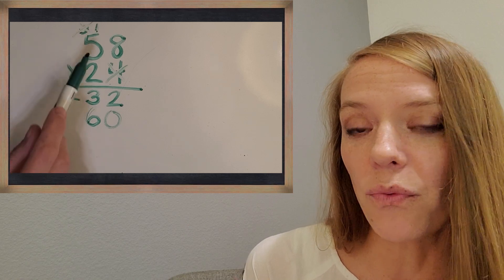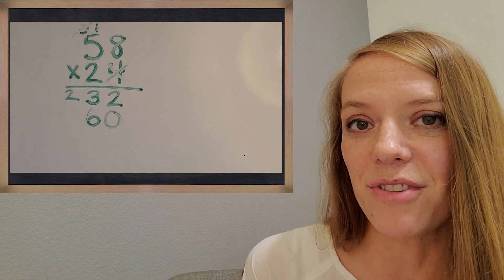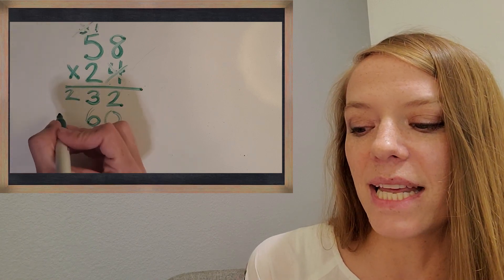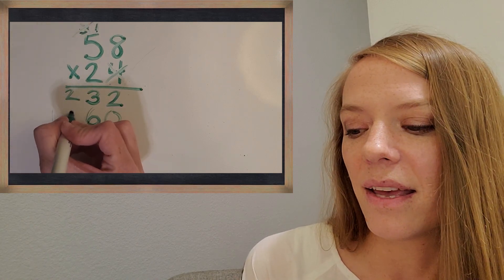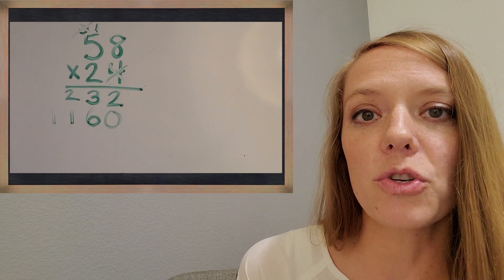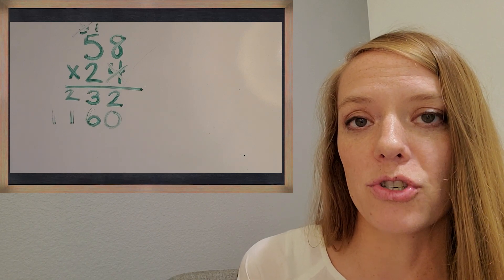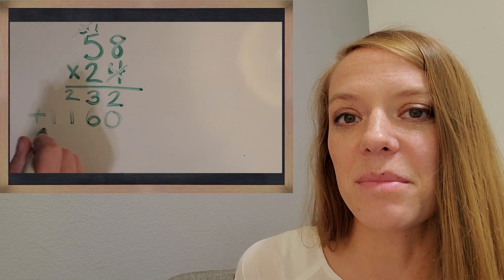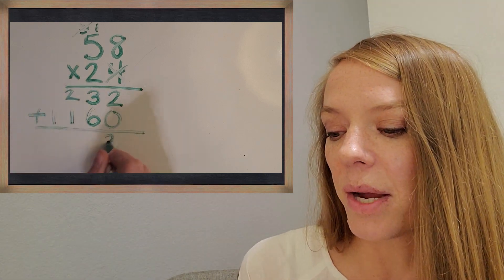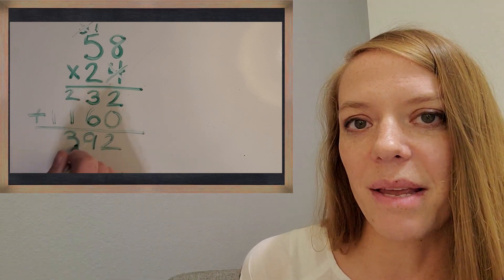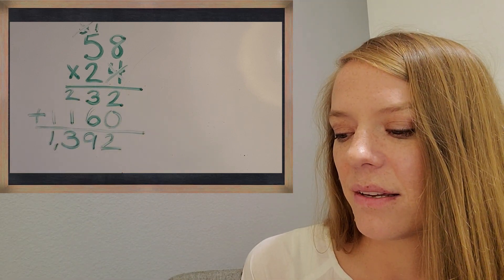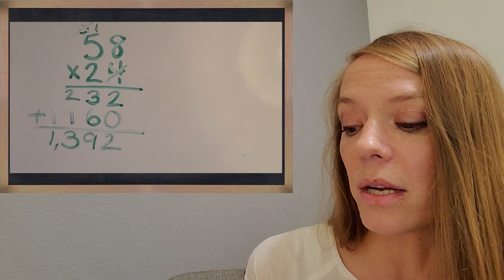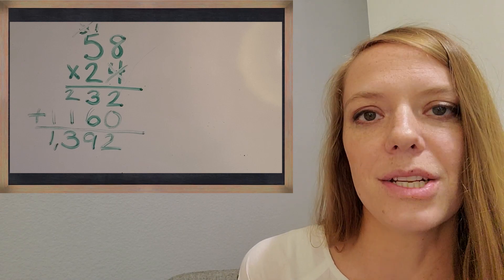Now we can do five times two. Five times two is 10, plus the one is 11. Now I've got my two partial products. We add them together to get our final product. It's 1,392. Great job.